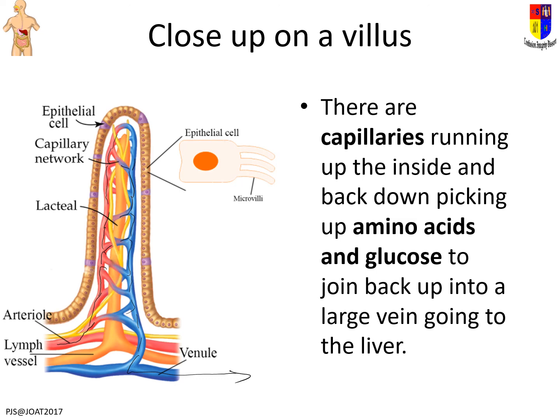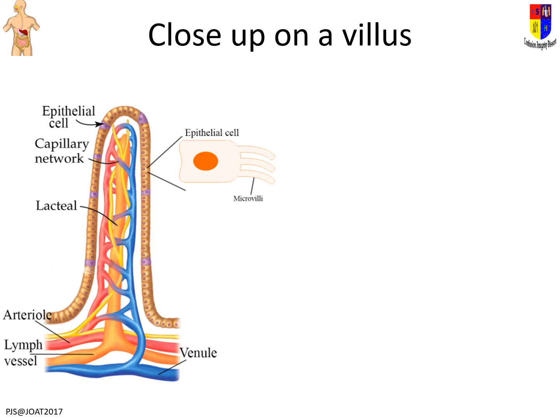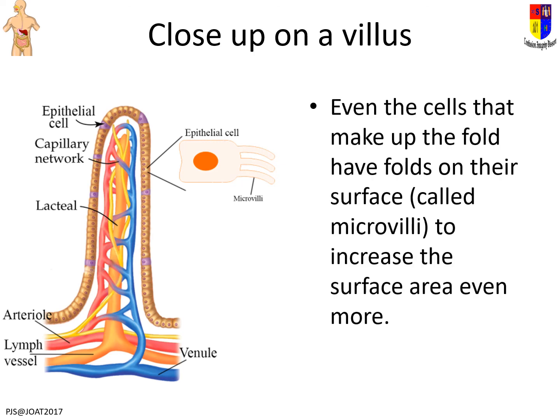Blood coming in picks up amino acids and glucose, then goes back out carrying them to the liver. The liver then decides how much gets into the blood, how much gets stored, and how much gets rid of. Finally, zooming in even further on one cell of the villus, you find that even the folds have folds on top of them — microvilli — increasing the surface area even more.